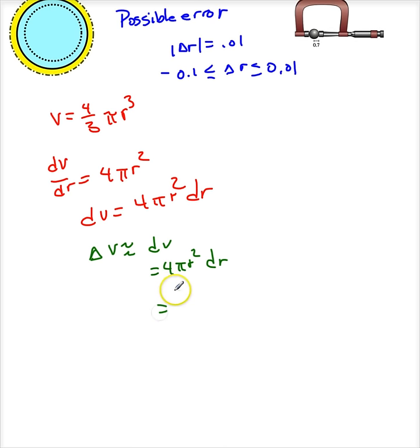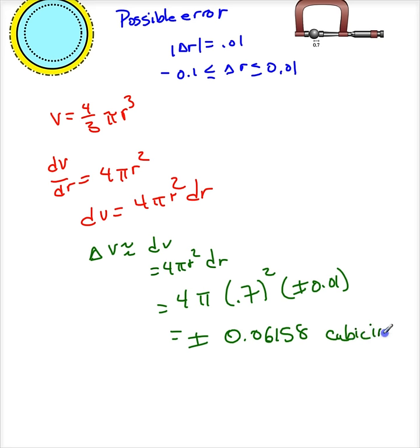Now, let me plug in my values. This is 4 pi. My measured value of r is 0.7 squared. And dr is plus or minus 0.01. So I get a possible volume error of 0.06158 cubic inches. And it could be plus or minus.